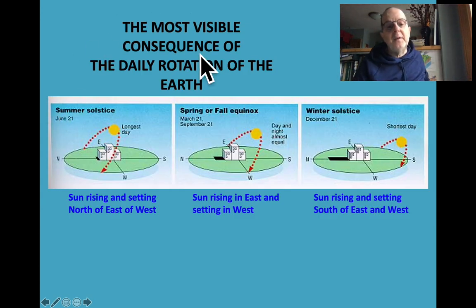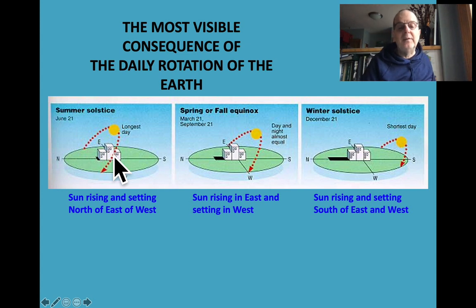The most visible daily consequence of the Earth's rotation is the Sun, planets, stars, and Moon rising and setting. The Sun rises and sets in different locations along the horizon over the course of the year, rising north of east and west in the summer, east and west around the equinoxes, and south of east and west in the winter months.